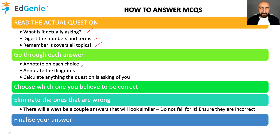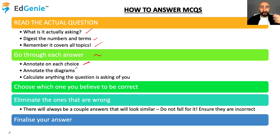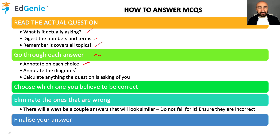Step two: go through each answer and annotate each choice — tick, cross, or a mark to indicate why it might be correct. Annotate the diagrams. If the question is asking or suggesting that there has been an increase in commodity prices and an increase in taxes, think about which diagram would be most relevant and what impact that has had on the SRAS or the supply curve. When you annotate the diagrams, the answer will often become clear.